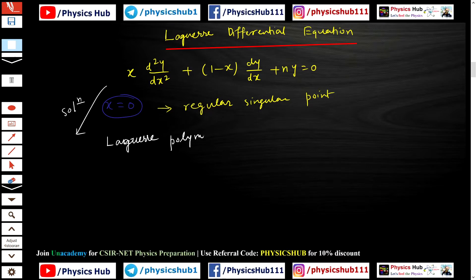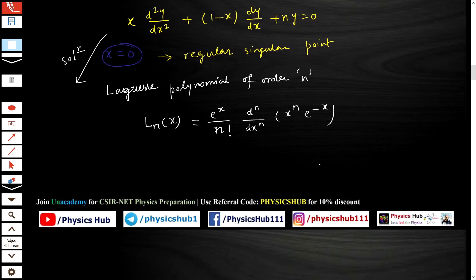Laguerre polynomial of order n is represented by the symbol Ln(x). It is given by: Ln(x) = (e^x / n!) * (d^n/dx^n)[x^n * e^(-x)]. So Ln(x) will satisfy the Laguerre differential equation.